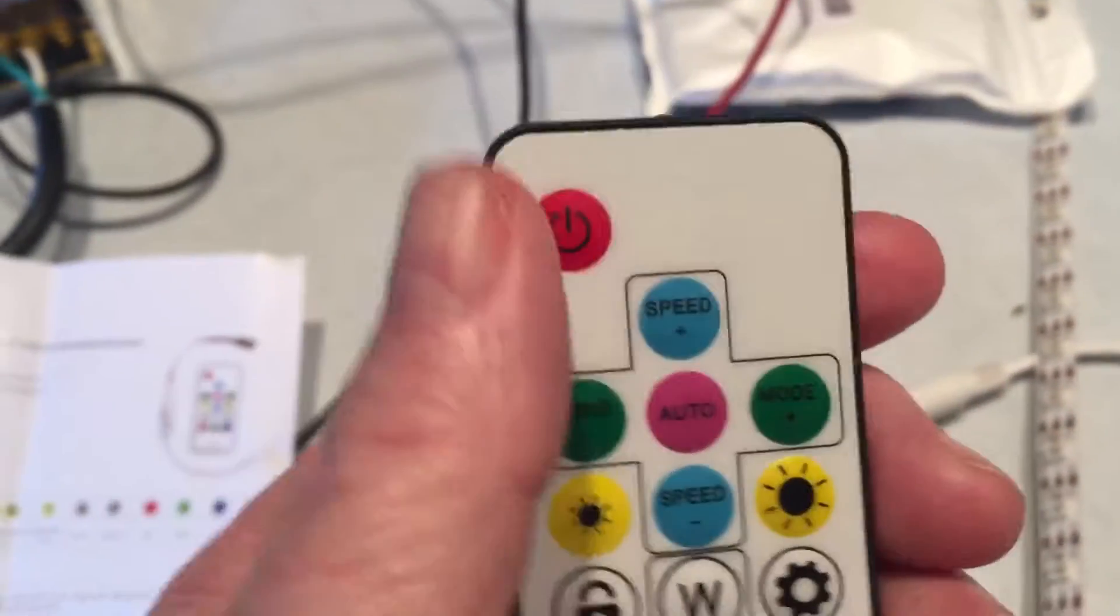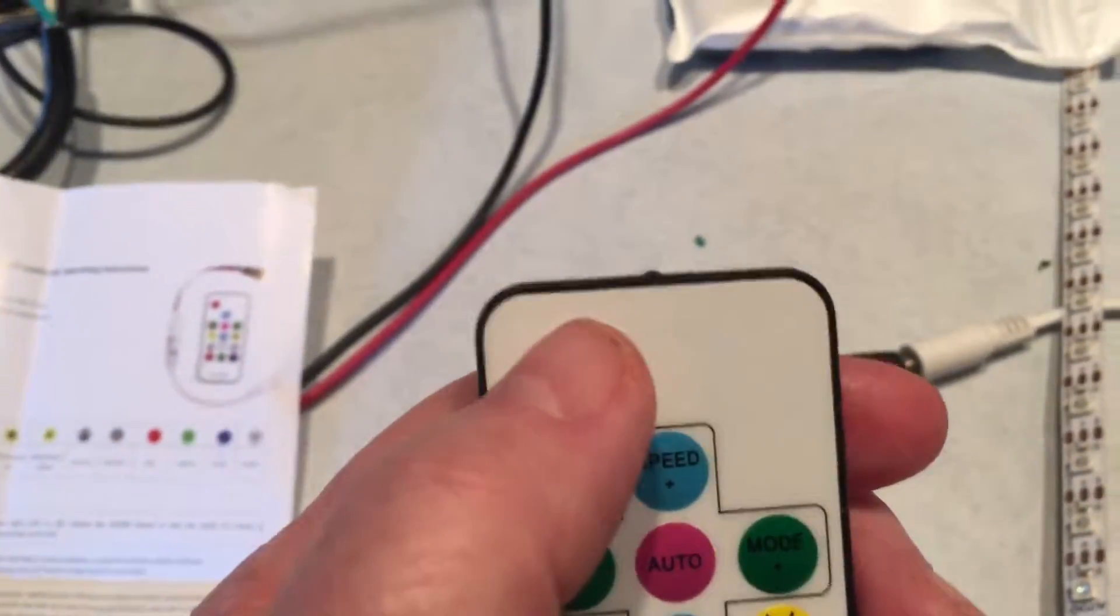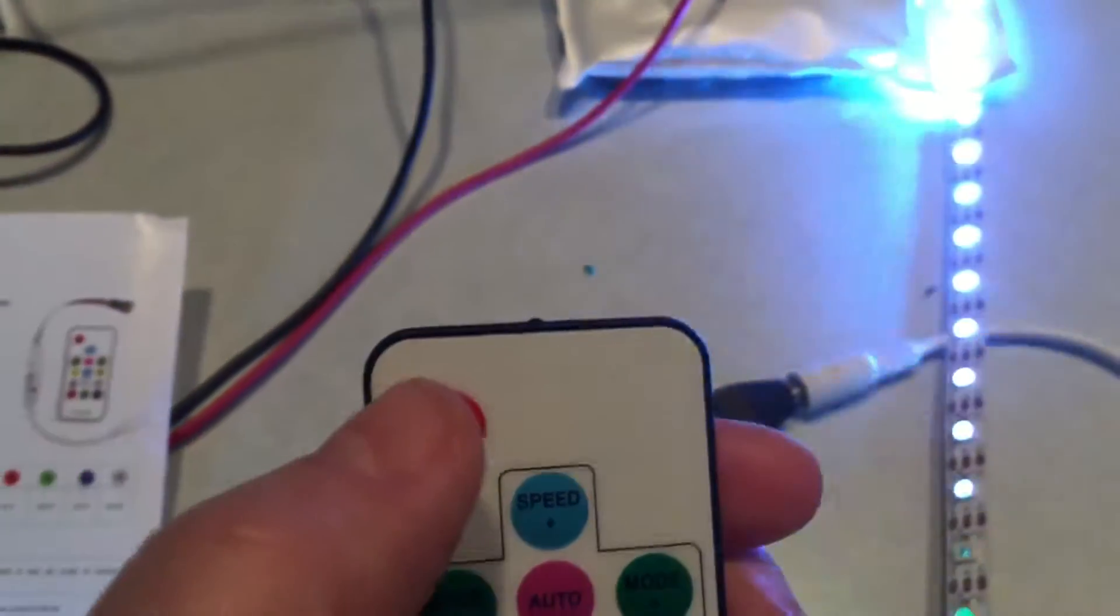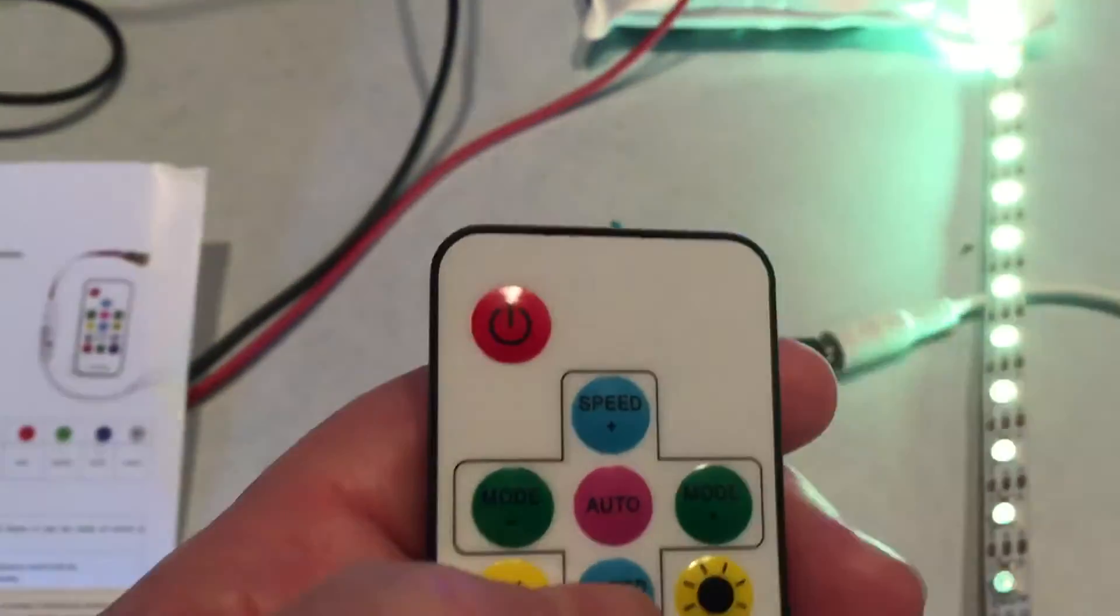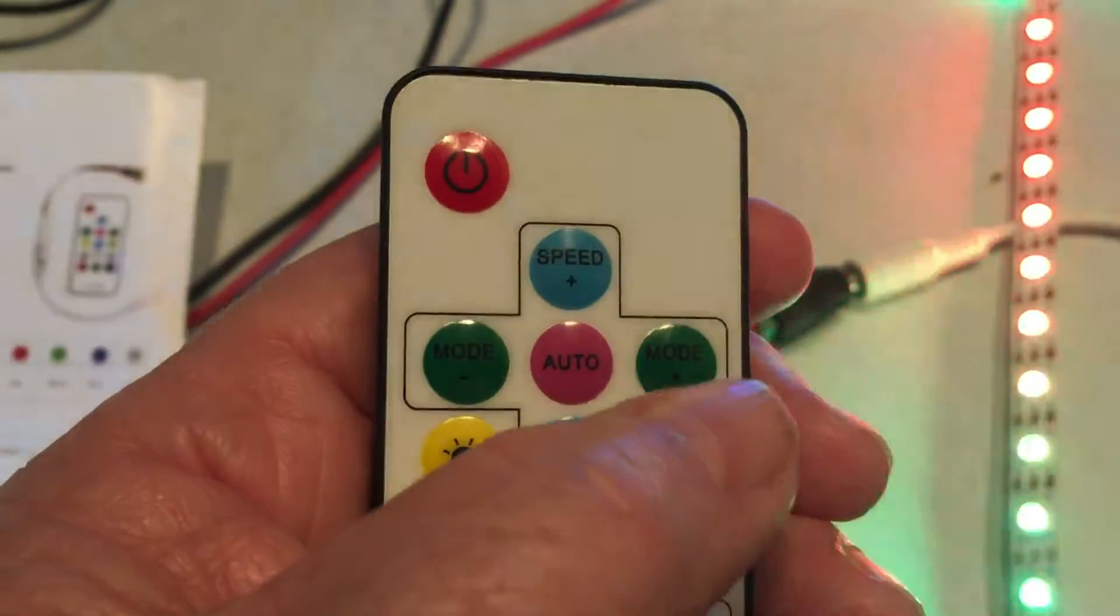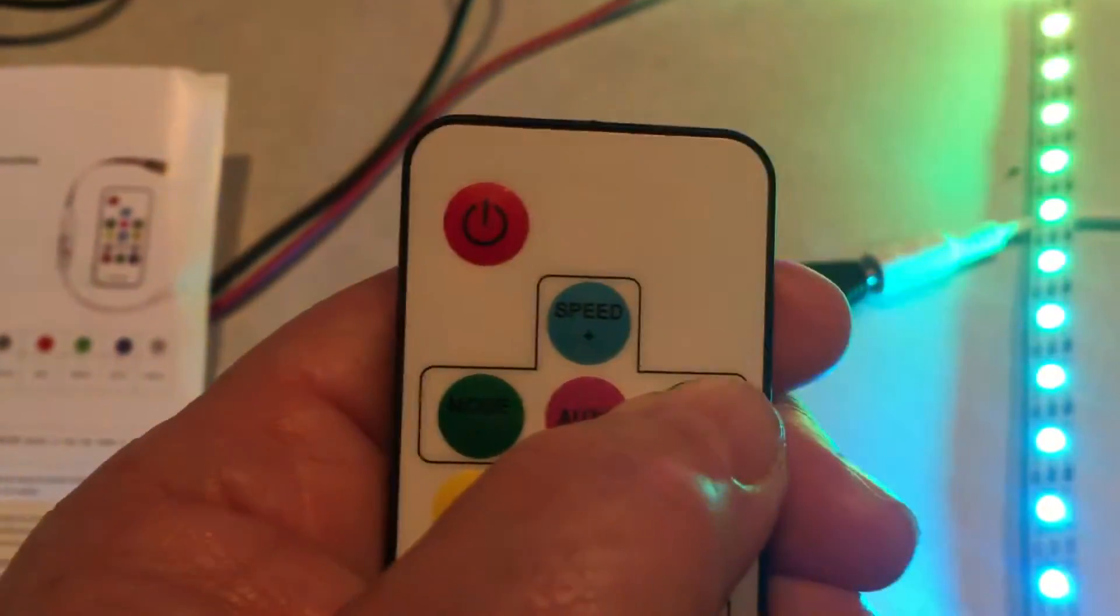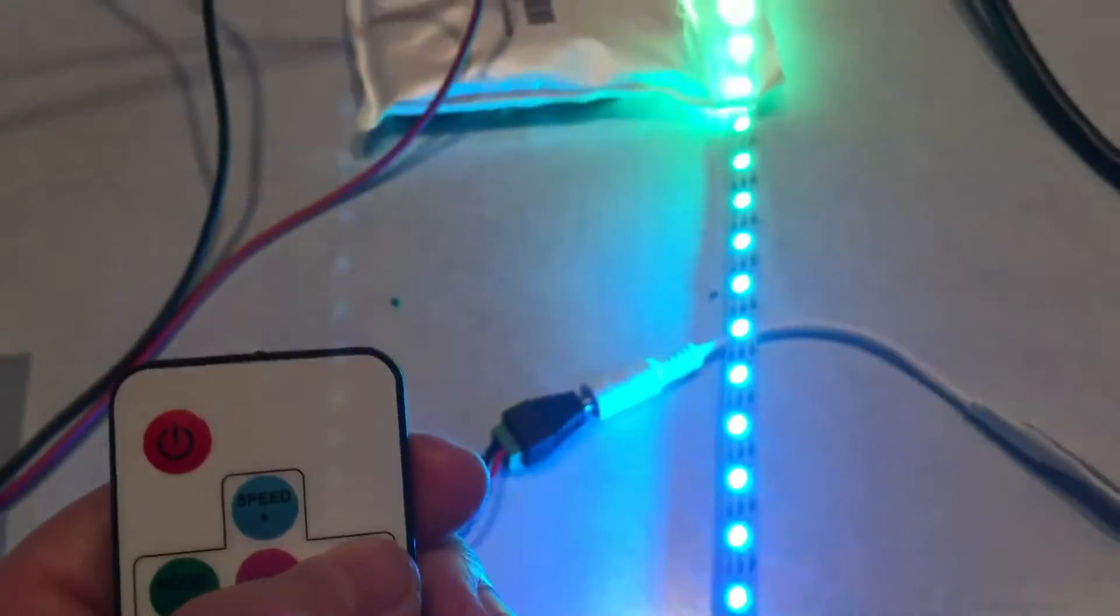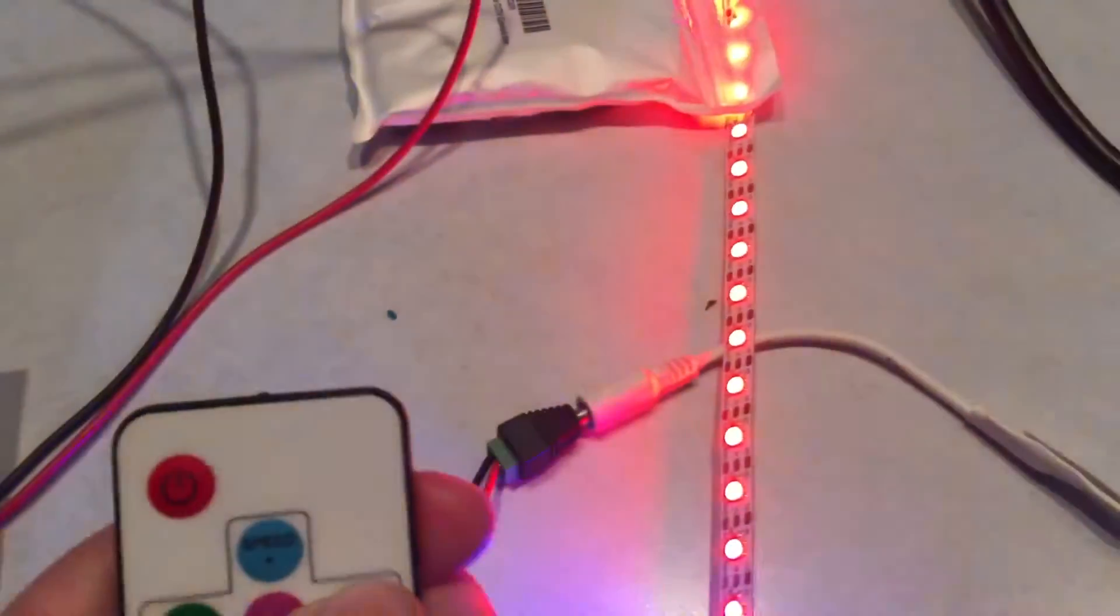Basically you just turn it on and it goes into an auto mode, but if you want to change the patterns there's a button you can just keep clicking and go through the patterns. I'm just clicking the plus button.